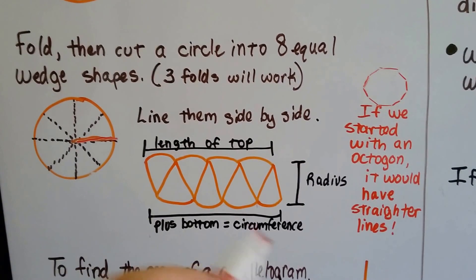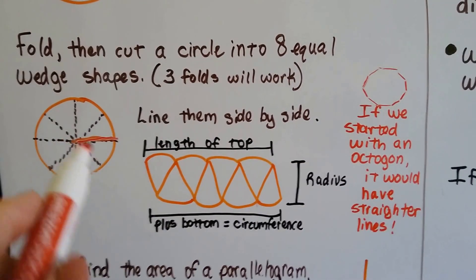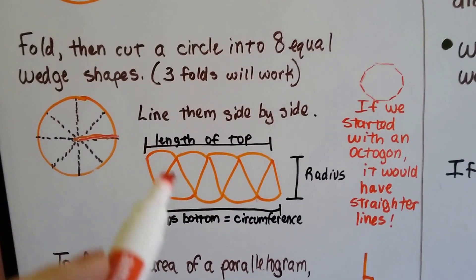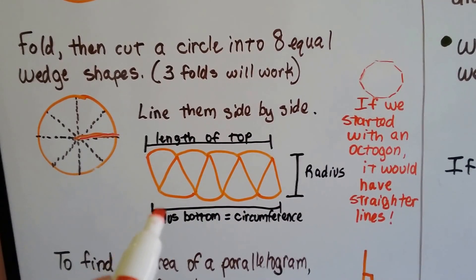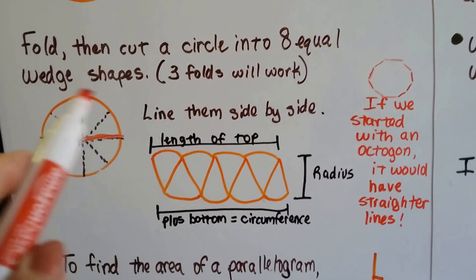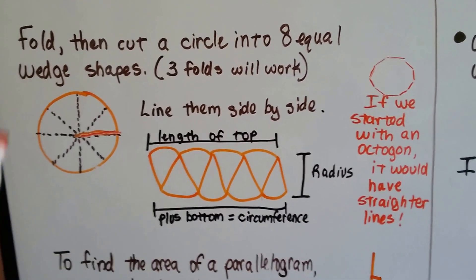This is the radius right here, it's the side of the wedge. If we measure from this point to this point, and this point to this point, that would be the circumference. That would be all these arcs coming around, the circumference of the circle.